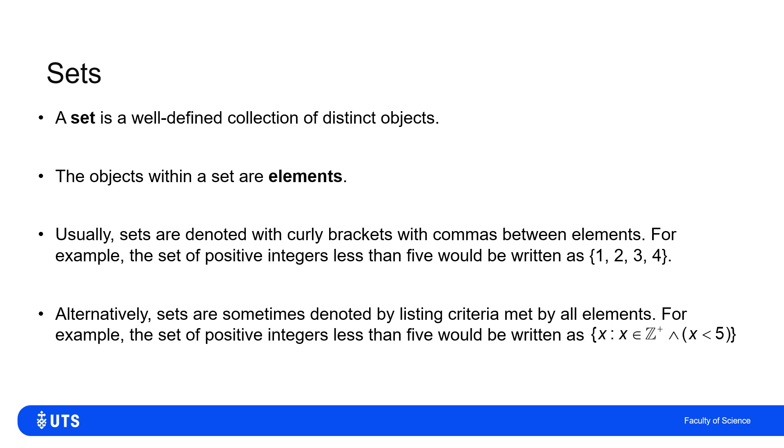So this is the set containing all things which satisfy being a positive integer less than five. So it's exactly equivalent to {1, 2, 3, 4}.